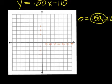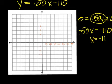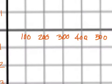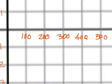Move this over to the left and make it negative point five x equals negative one ten. If I divide negative one ten by negative point five, I get two hundred and twenty. So the x-intercept is two hundred and twenty. We'll go in here and mark the x-intercept at two twenty — it's going to be about right here, between two fifty and two twenty-five. We'll make a dot there at two twenty — that's where it crosses the x-axis.